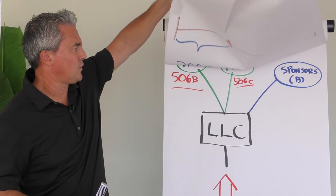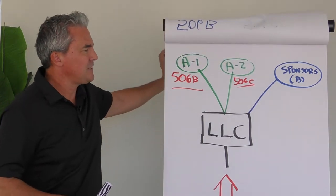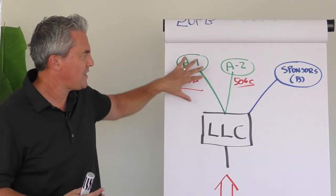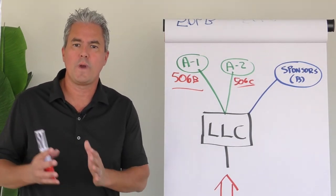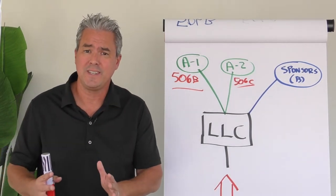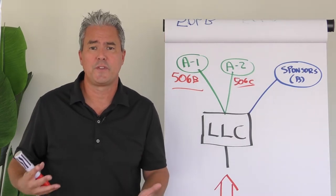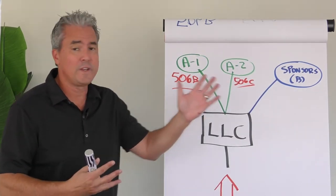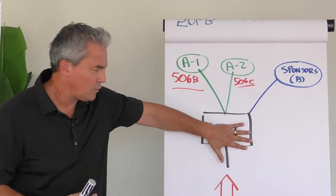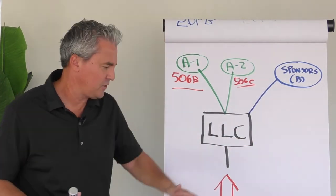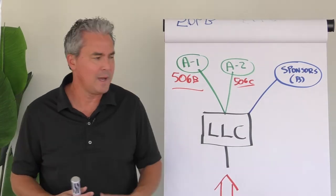And one of the things that we like to recommend to our clients is actually separating or creating two separate classes of shares, or in this case, membership units, each one representing the 506B and the 506C so that there's no confusion out there when you're actually advertising which deal you're actually doing. So typically, when we structure these, we still create our LLC just like every other syndication that's going to own whatever property you're buying.